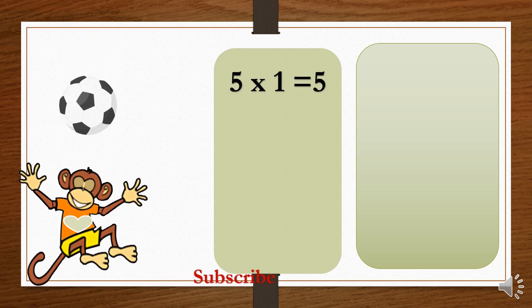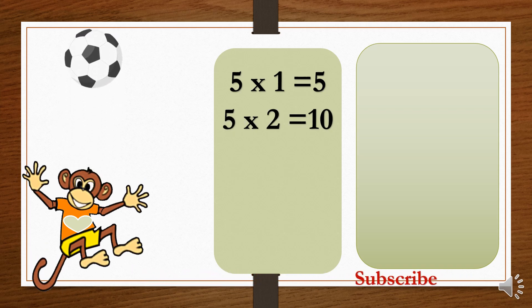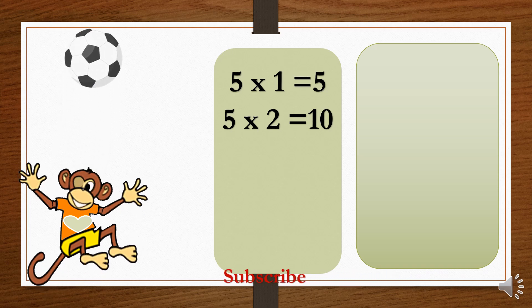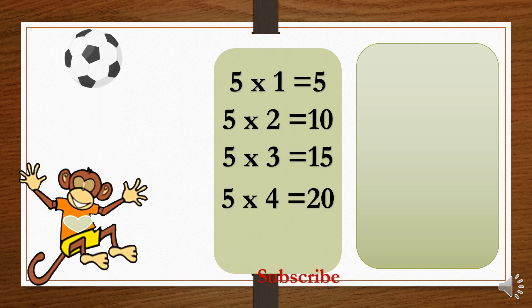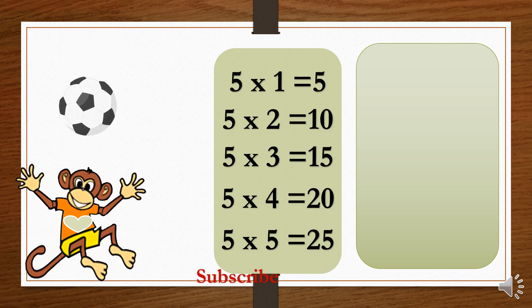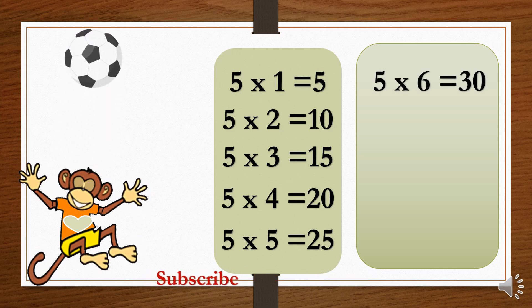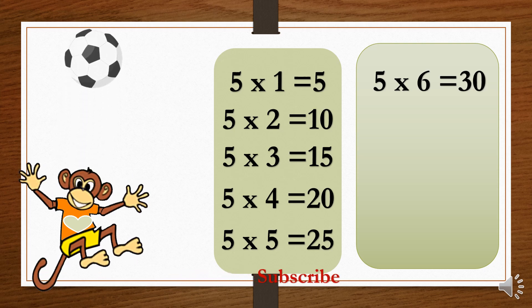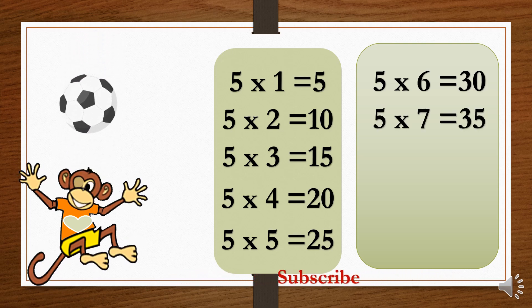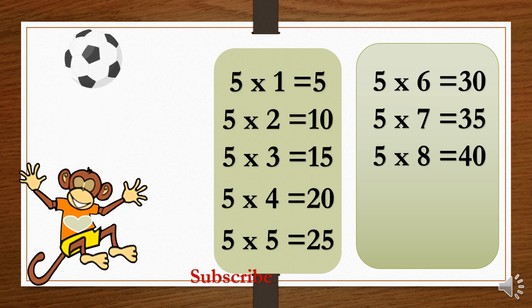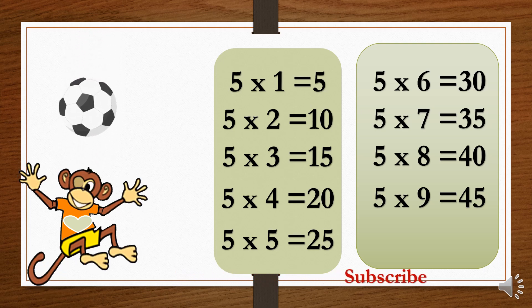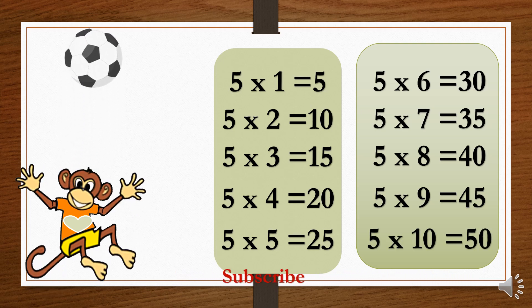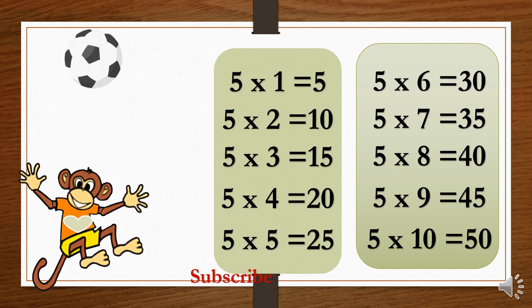5×1=5. 5×2=10. 5×3=15. 5×4=20. 5×5=25. 5×6=30. 5×7=35. 5×8=40. 5×9=45. 5×10=50.